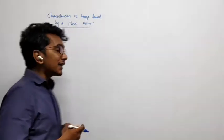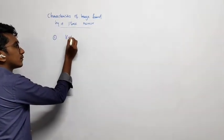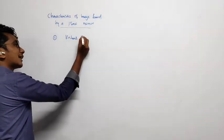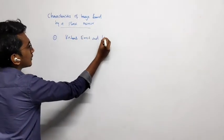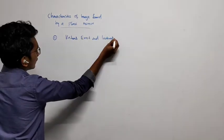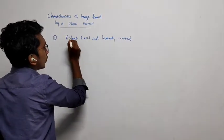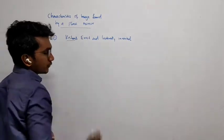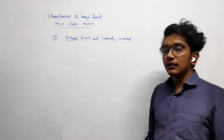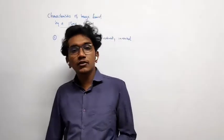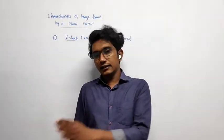The first property: the image is virtual, erect, and laterally inverted. So what is the meaning of virtual? There is real image and virtual image — virtual is just the opposite of real. I will explain this in more detail next.